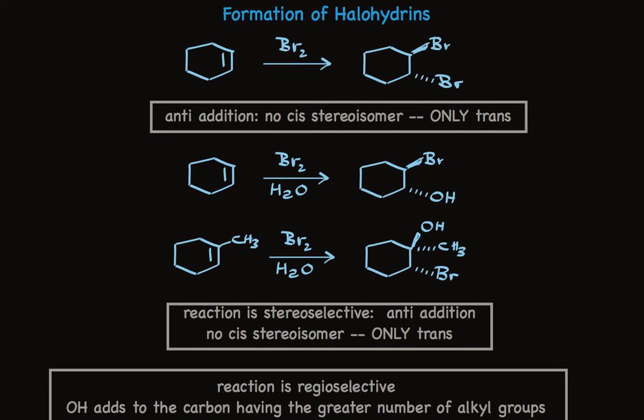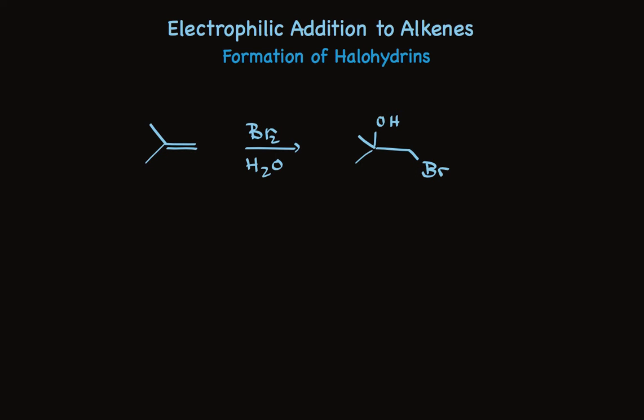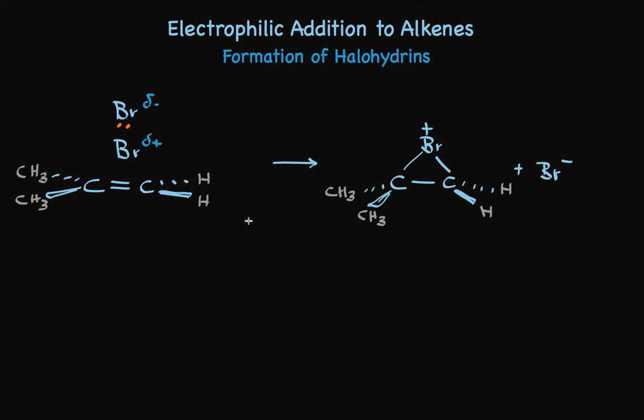We can understand both the stereoselectivity and the regioselectivity by looking at the mechanism. I want to look at a simple case so we can focus on the regioselectivity. Isobutylene is treated with bromine together with water. The hydroxyl adds on the more substituted carbon, and the bromine on the less substituted carbon. From the video on bromine addition, when the bromine molecule approaches the pi bond, it's polarized, and the bromine atom closest to the pi bond becomes an electrophile. The pi electrons form a sigma bond with bromine, giving a bromonium ion.